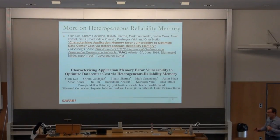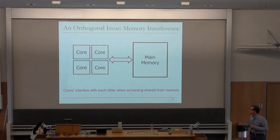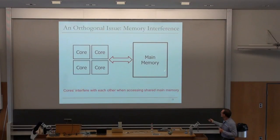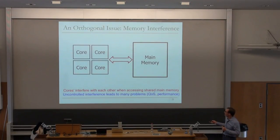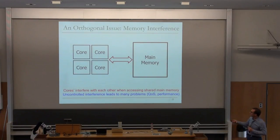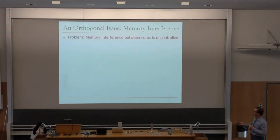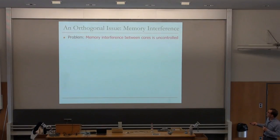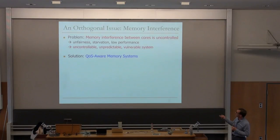After covering some of this, we're going to talk about orthogonal issues like memory interference. It doesn't matter what technology you use — hybrid, heterogeneous, STT-MRAM, PCM, DRAM — if you have computation units sharing main memory and they're interfering with each other because the medium is shared, you may have uncontrolled interference. If you don't control this interference, it leads to many problems: quality of service issues for cores that need latency requirements, and performance problems because you may be prioritizing one core for a long time and denying service to many others. Memory interference between cores, if uncontrolled, leads to an unpredictable, vulnerable system.